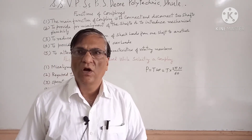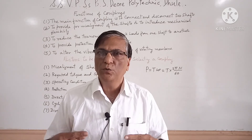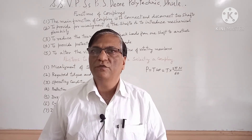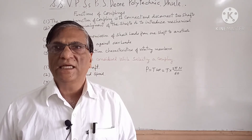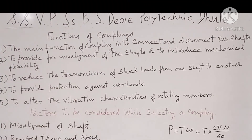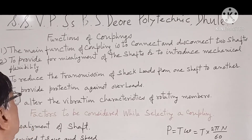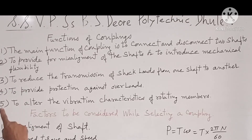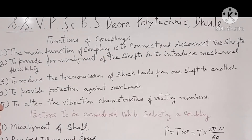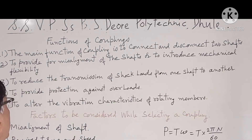The main function of coupling is to connect two shafts and disconnect them whenever required. In detail, the main function is to connect and disconnect two shafts, to provide for misalignment of the shafts, or to introduce mechanical flexibility.